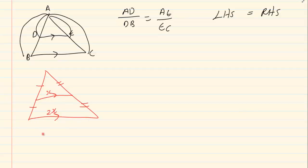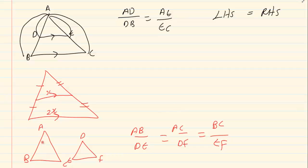The third theorem we learned was when the triangles are similar then the ratio is in proportion to the angles. The three theorems you need to work together in order to solve the riders. Now let's look at the following rider.